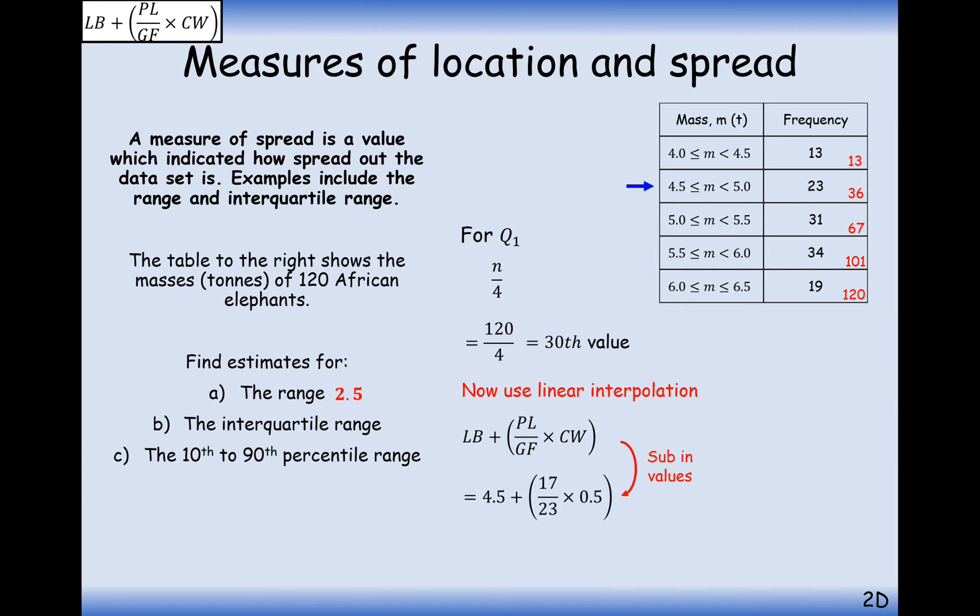So in this case, we're going to substitute in the values 4.5 is the lower bounds of the group. We're going to go 17 data values into this group. We've already had 13 above. We want to go to the 30th data value, so the 17th value inside this group. Out of 23 data points in this group, so effectively we're going this fraction into a group that's 0.5 wide. The class width here is 0.5. So sub that into your calculator and calculate it, and you get 4.87.